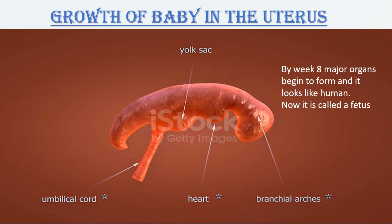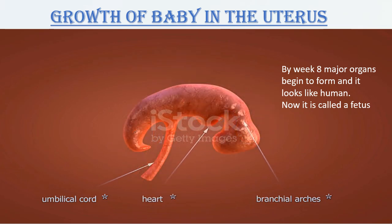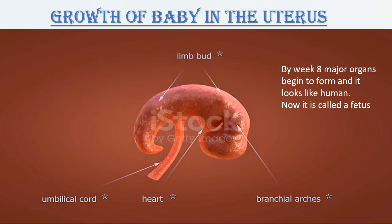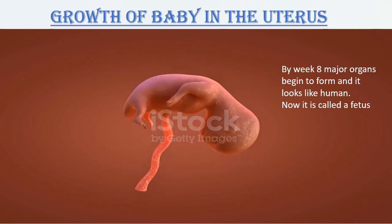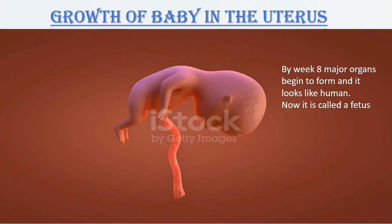From the fifth to the sixth month, fingers, toes, and fingerprints appear, and the baby kicks. Hair also begins to grow. From the seventh to the eighth month, the baby develops rapidly — the baby can hear and respond to sounds, and has started to gain weight.